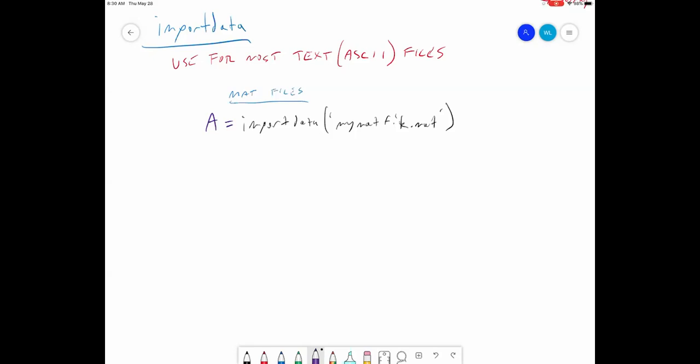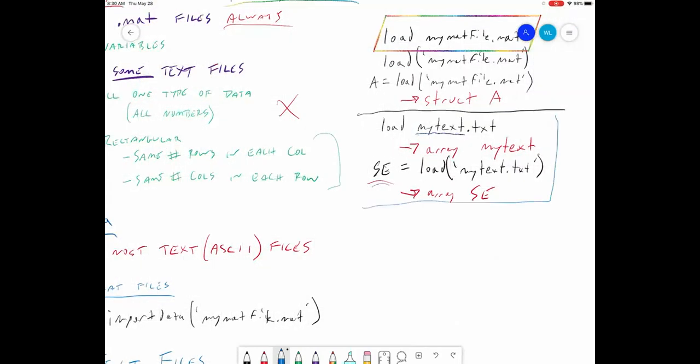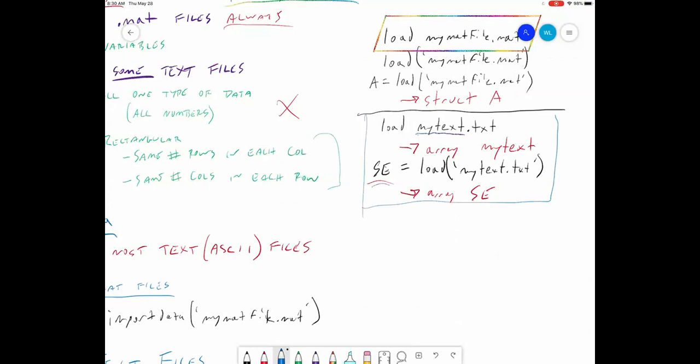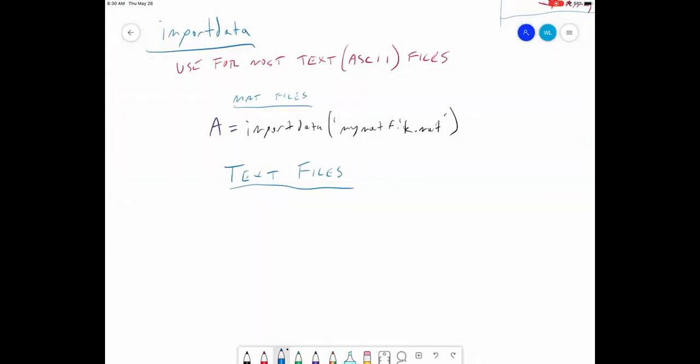So, again, mat files are not where import data is powerful. Import data has its most power dealing with ASCII text files. Now, if you have a text file that you could have opened with load, so one of these commands would have worked just fine for your text file, then import data and load are interchangeable. However, if you have a text file that has a mixture of text information and numbers, then you need import data, and it's going to look like this.